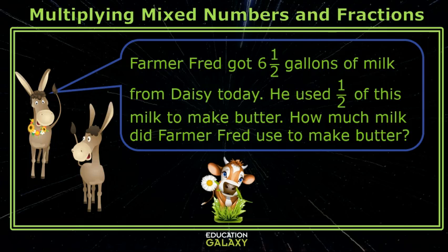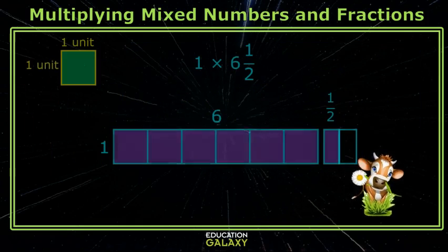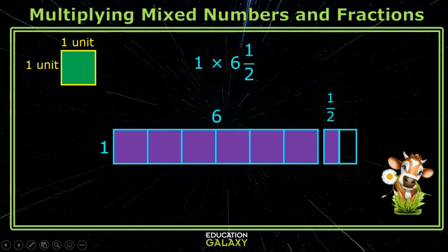Okay, Melvin, you get to try one now. Farmer Fred got six and a half gallons of milk from Daisy today. He used half of this milk to make butter. How much milk did Farmer Fred use to make butter? I'll get you started. Here's a model to use for one times six and a half.